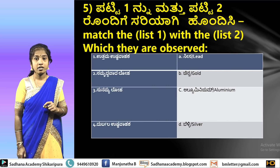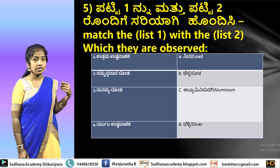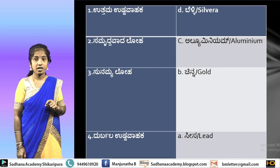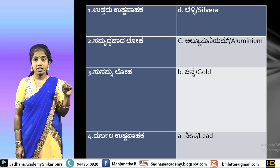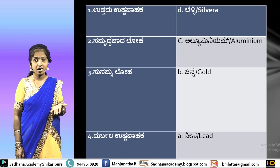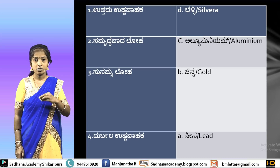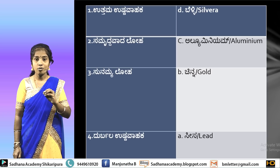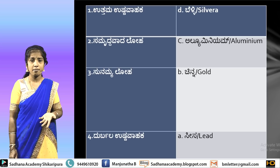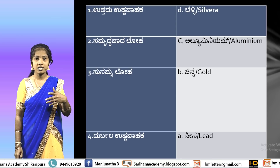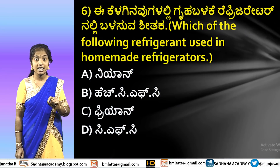The next one — match the following: one side has characteristics of metals, the other side has metal names. Match them correctly. The best heat conductor — highest heat conducting capacity — that is silver. Silver is one of the best heat conductors. Next, the most abundant metal is aluminium. Next, the most ductile and malleable metal is gold (chinna). Poor heat conductor — durbala uushna vahaka — is lead (sisa).